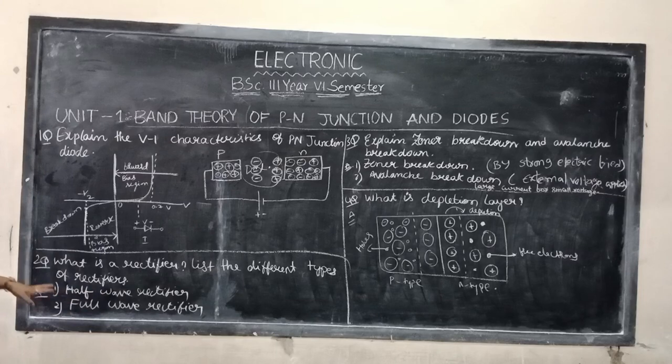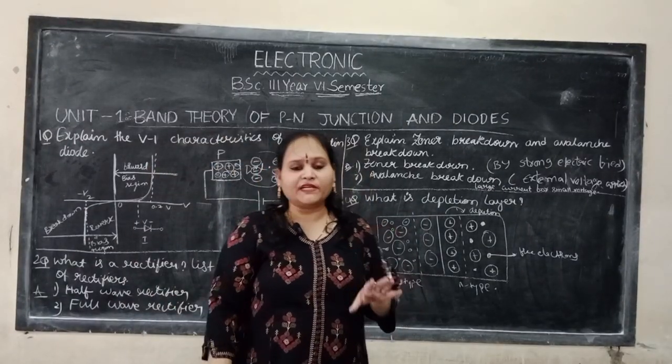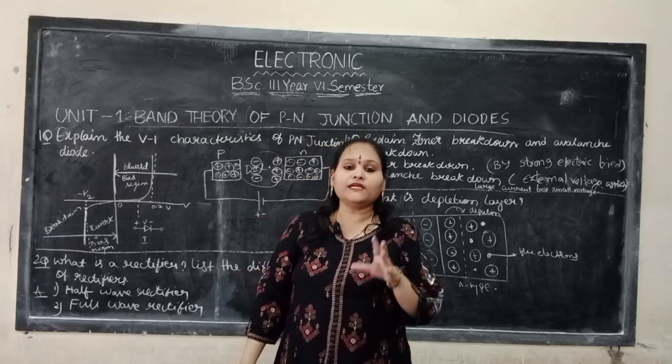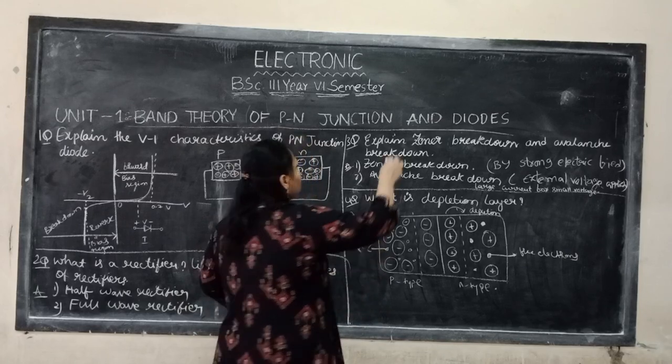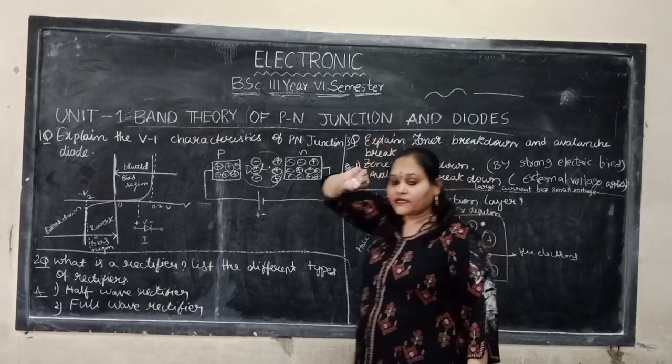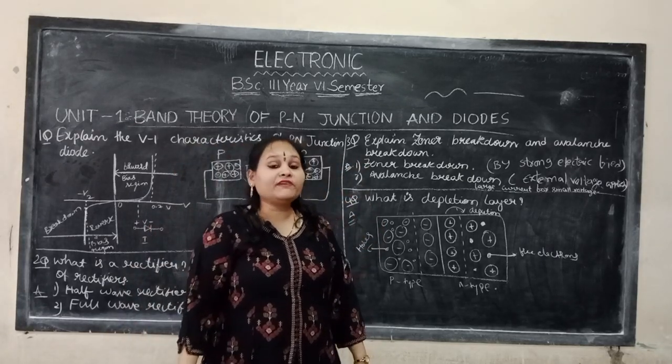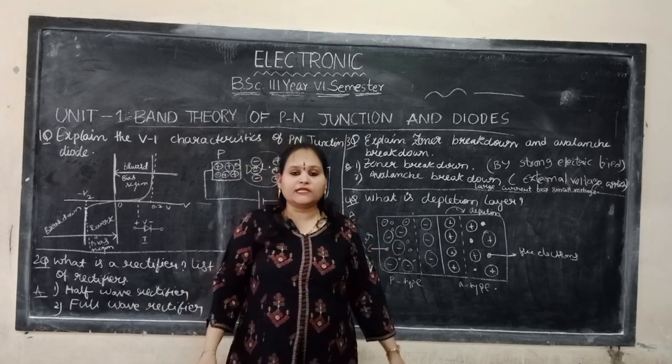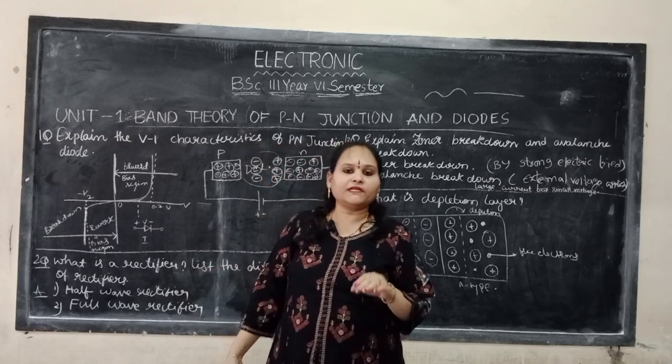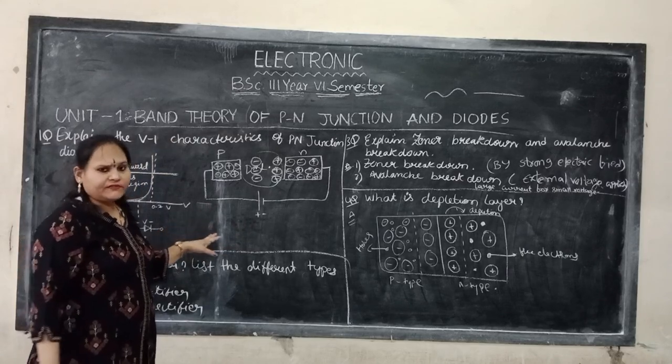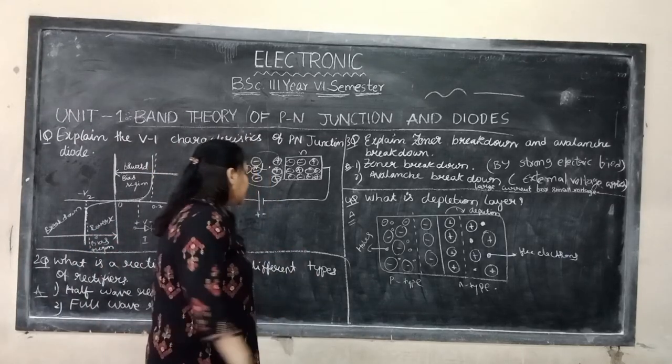Now, what is a rectifier? Rectification is the conversion of AC current to DC current. There are different types of rectifiers. The two main types are half-wave rectifier and full-wave rectifier. Half-wave rectifier uses one diode, while full-wave rectifier uses multiple diodes.